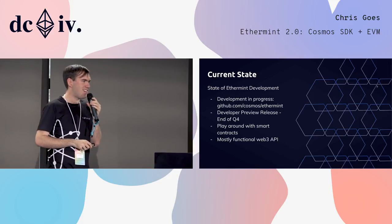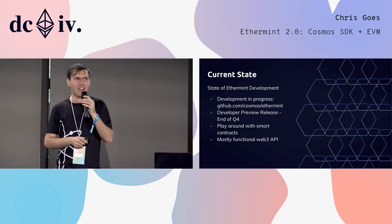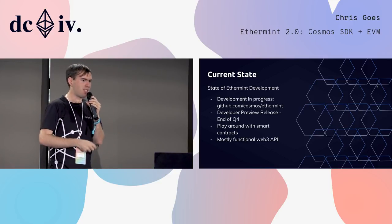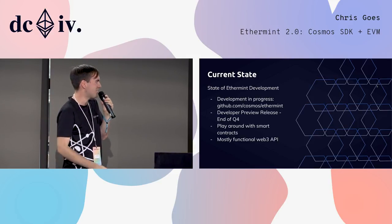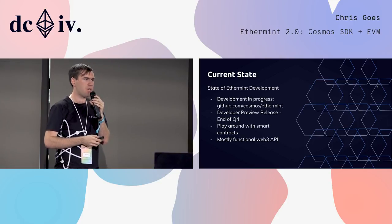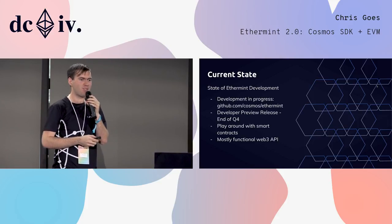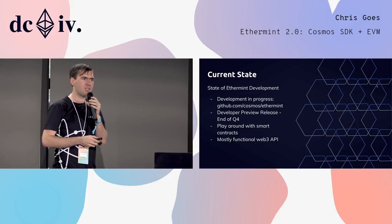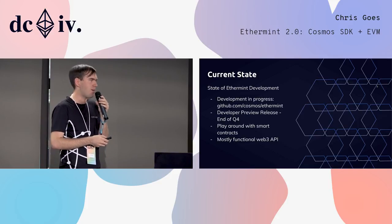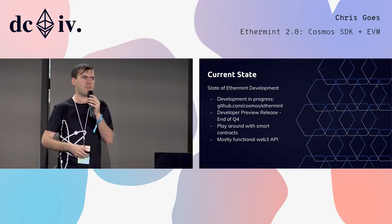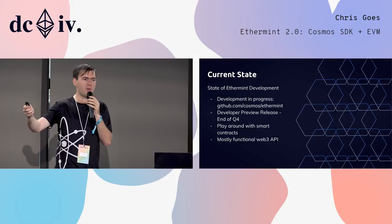So what's the state of all of this? Ethermint is not vaporware — you can find it on GitHub. Development is progressing exceptionally quickly, worked on by Bez, who's sitting in the audience, and by Alexei, who will be giving a talk tomorrow. We're anticipating a developer preview release which will have a functional, 99.9% functional Web3 API by the end of Q4 this year, which will allow you to deploy Solidity contracts to the EVM module and play around with Ethermint. We encourage you to check it out, send us feedback, and tell us what the challenges facing this kind of application deployment process are.